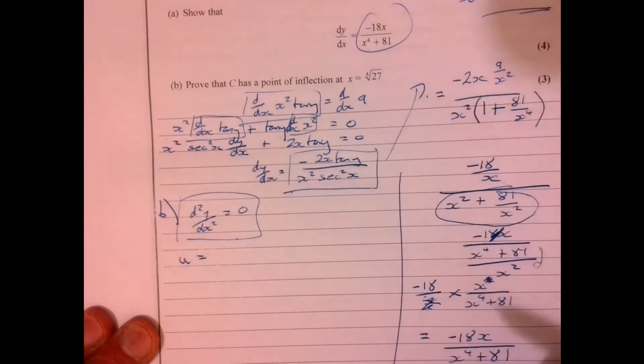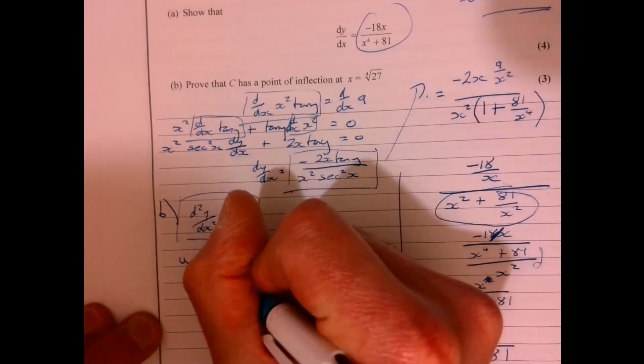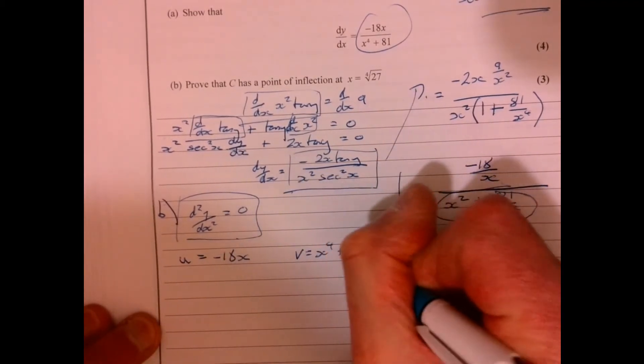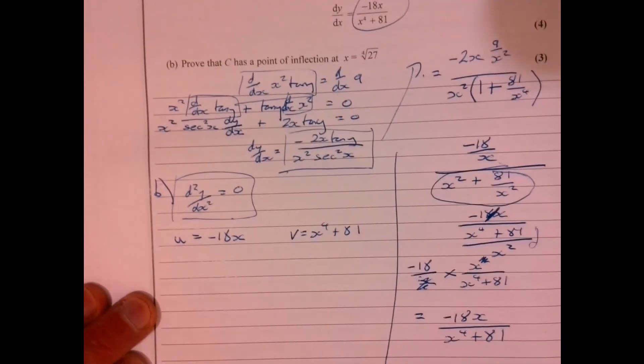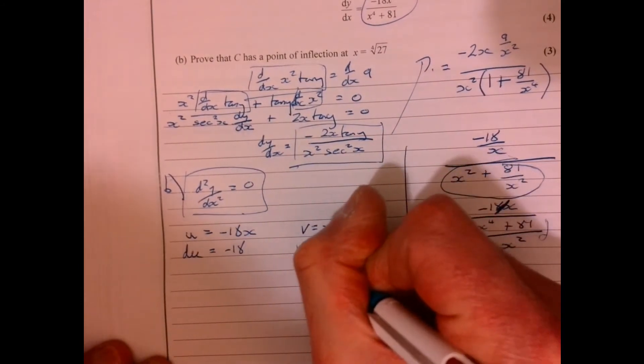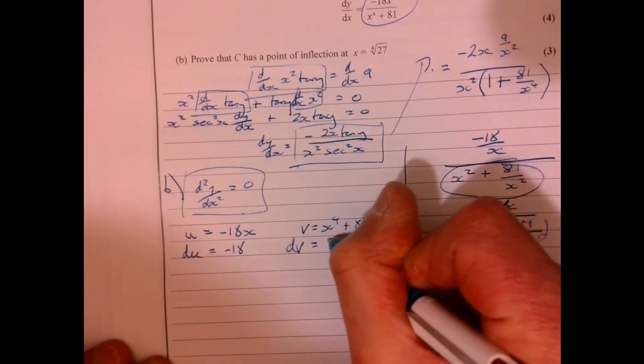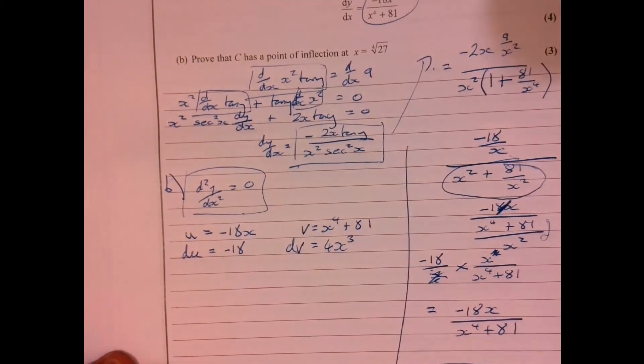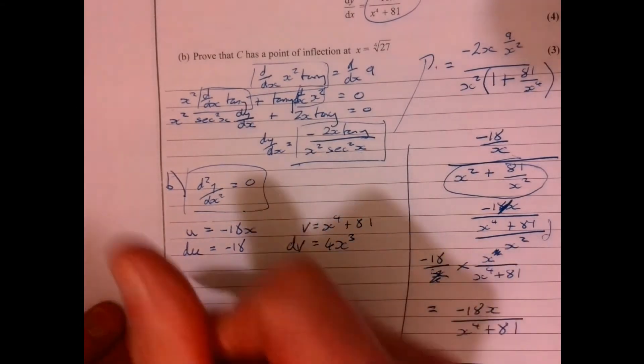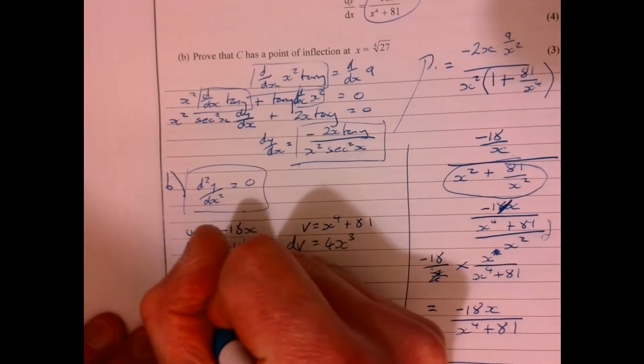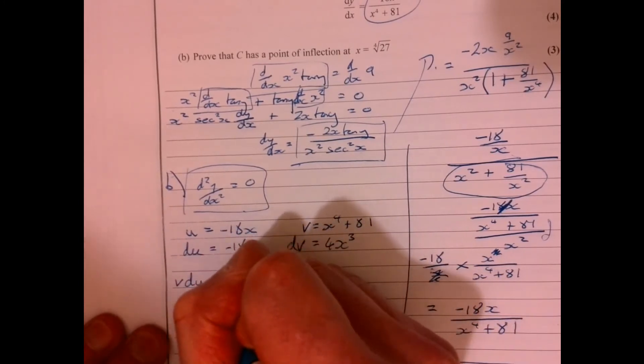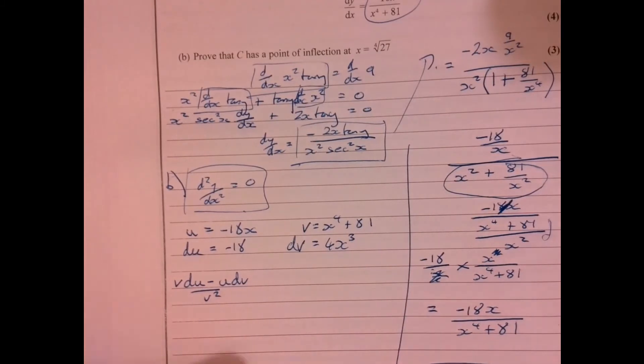So let's write, so it's quotient rule. So u equals minus 18x. v equals x to the 4 plus 81. So you would need to show this. So just doing quotient rule. That's all it is. So du equals minus 18. And dv equals 4x to the power of 3. Now just piece it all together. So hopefully, quotient rule. So quotient rule is just v du take away u dv over v squared. So just piece it all together.